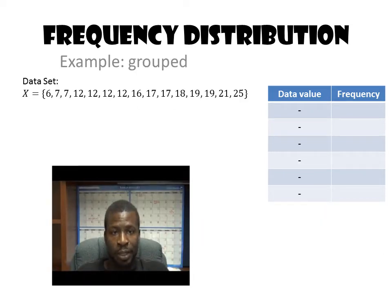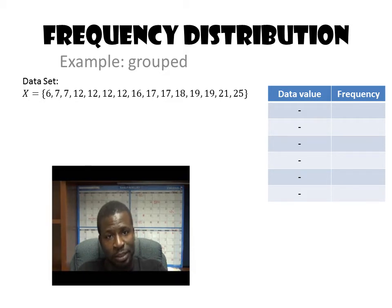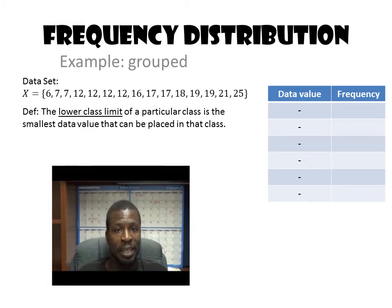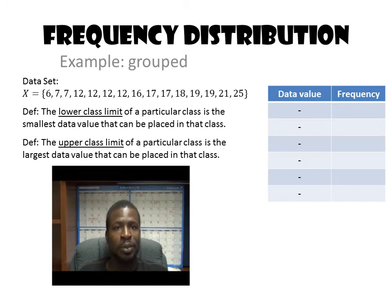Now we'll do an example with grouped data. We are going to need two definitions. The first is the lower class limit — since we're grouping data together, we need to define where each group begins and ends. The smallest data value that can go in a specific group is called the lower class limit, and the largest data value that can go in a specific group is called the upper class limit.